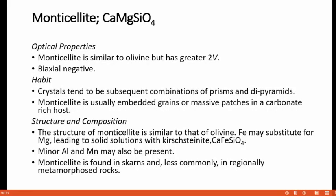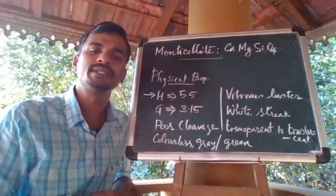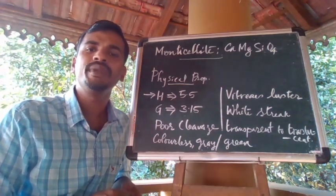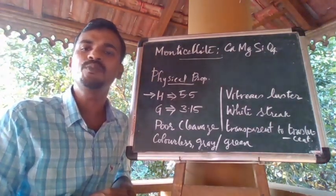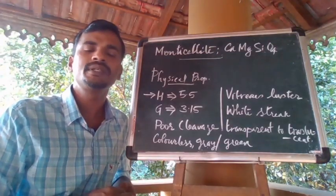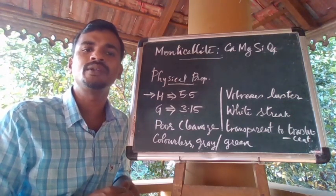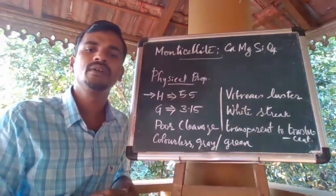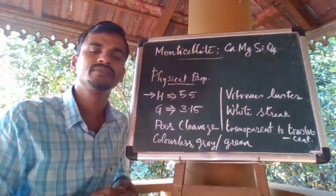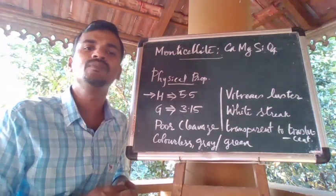Optically, monticellite is similar to other olivines but is characterized by a greater 2V angle. It is optically biaxial negative. Monticellite crystals tend to show combinations of prisms and bipyramids, and are usually seen as embedded grains or massive patches in carbonate-rich host rock. Iron may be substituted for magnesium, leading to a solid solution with kirschsteinite (CaFeSiO4). Minor aluminum and manganese may also be present.